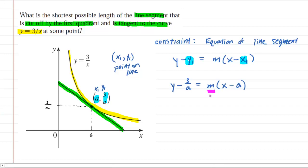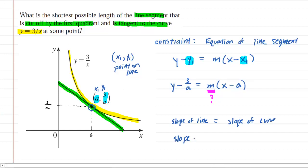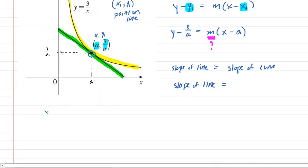What we really need next is the slope of this green line segment. A key idea from the picture is that the slope of the line segment is going to equal the slope of the curve at that particular point — that's the definition of a tangent line. The slope of the tangent line equals the slope of the curve that it intersects. So to get the slope of the line we're going to find the slope of the curve.